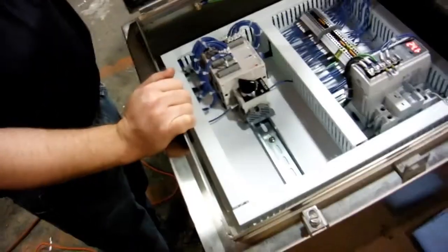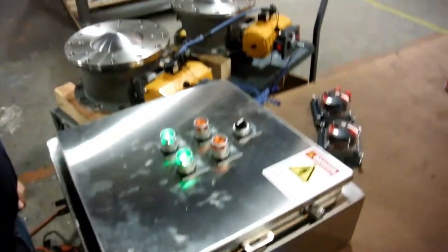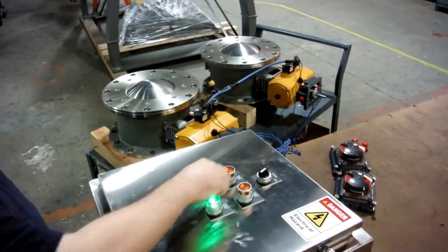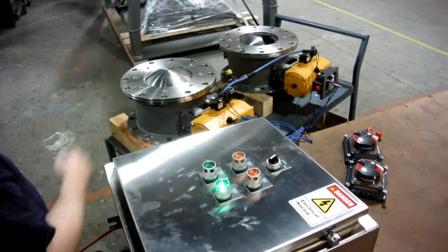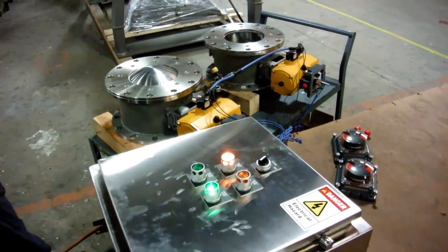A European-based nuclear research lab uses two JEMCO valves in an airlock arrangement for process containment. They specified a control panel with push buttons to operate each valve separately but interlocked, so two valves cannot be open at the same time.